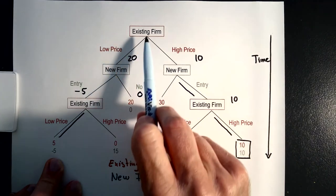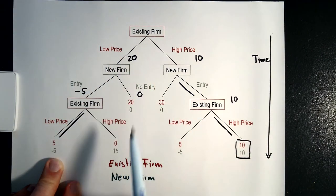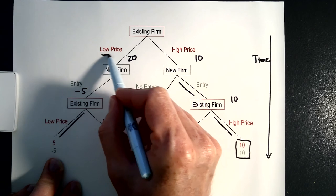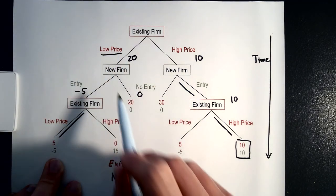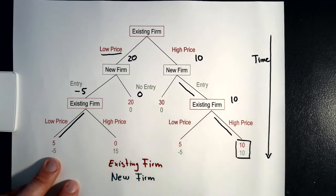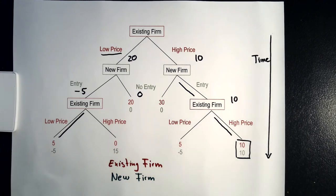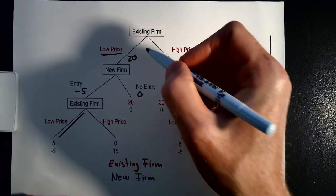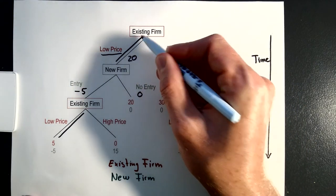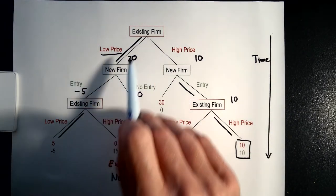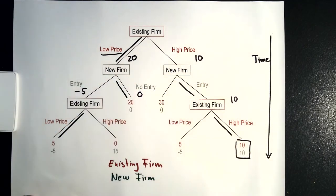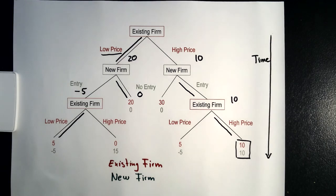We can see that right at the beginning the existing firm is going to price low in order to deter entry of the new firm. This is an example where the existing firm can deter entry. The Nash equilibrium in this case is: the existing firm prices low and the new firm does not enter. The Nash equilibrium stops after two decisions.